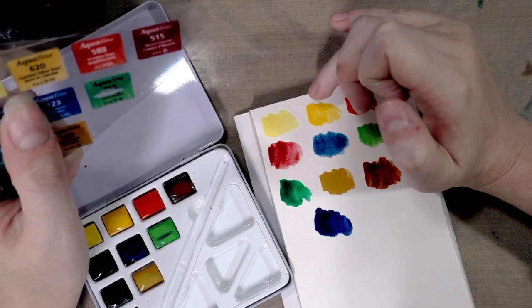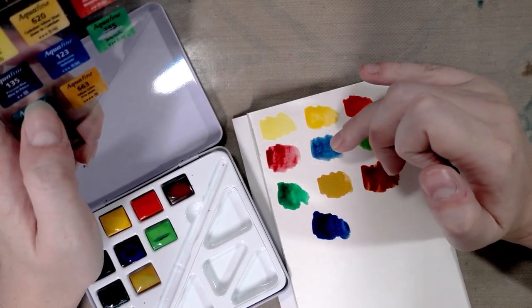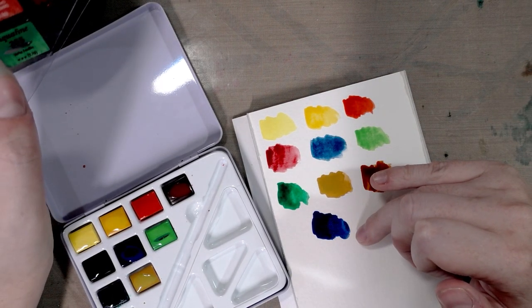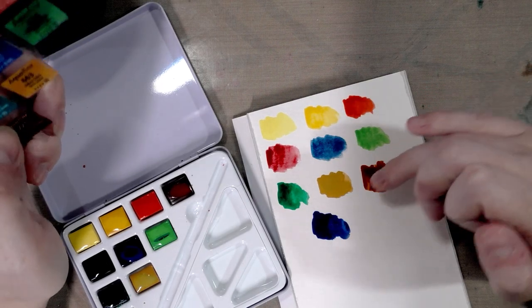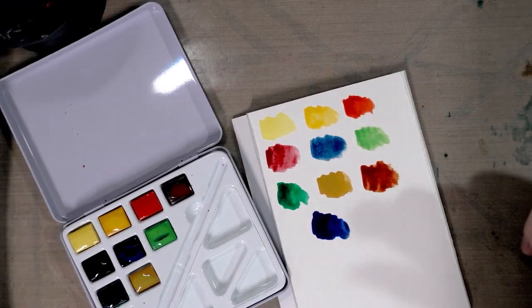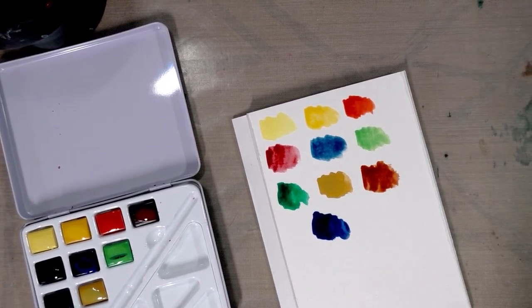Lemon yellow, cad yellow hue, vermilion hue, alizarin crimson, prussian blue, ultramarine which is really more of an indigo color right now, leaf green, viridian hue, yellow ochre, and burnt sienna.